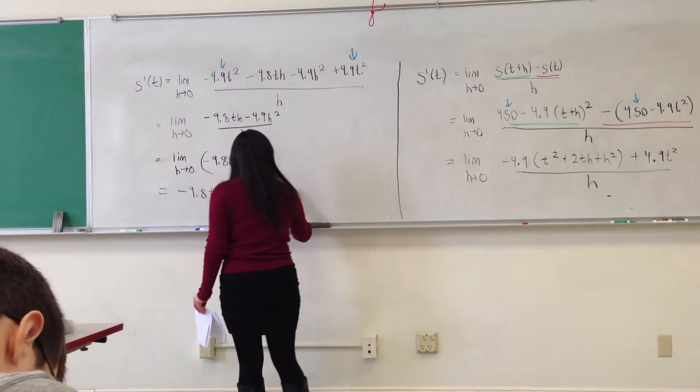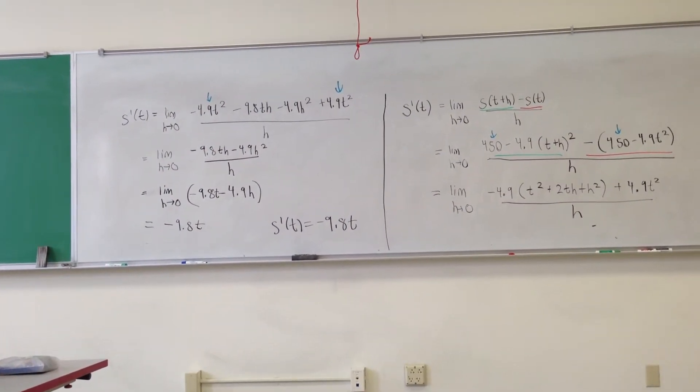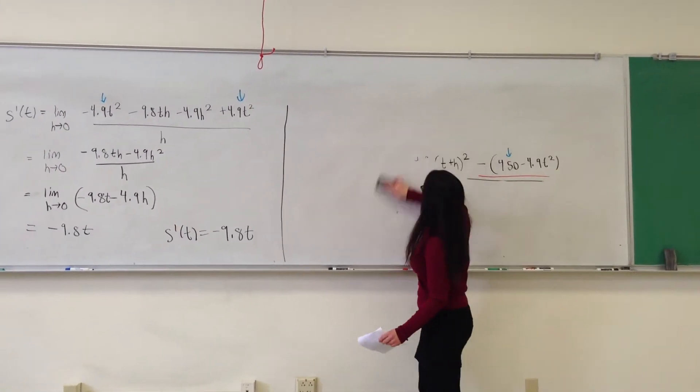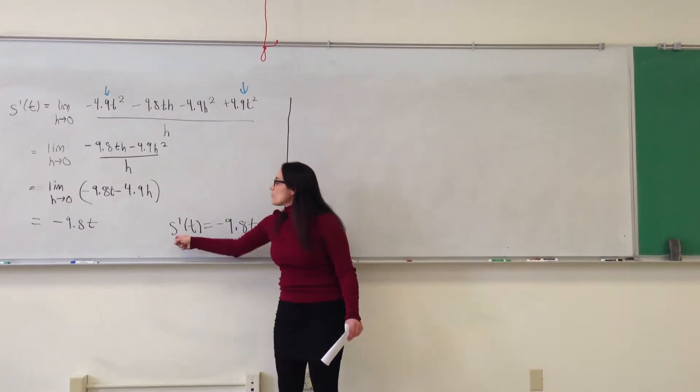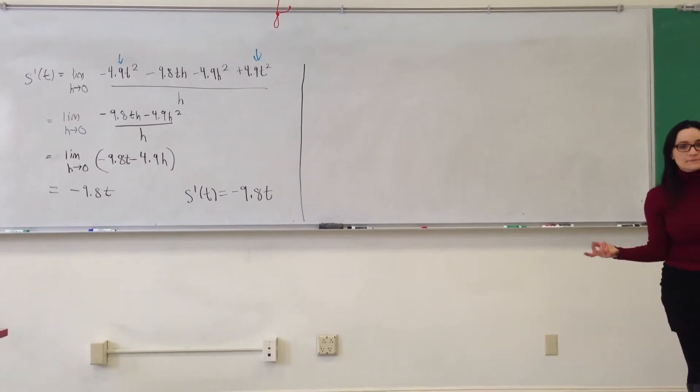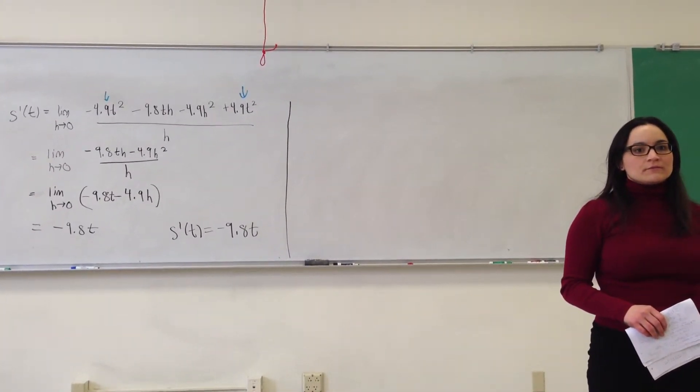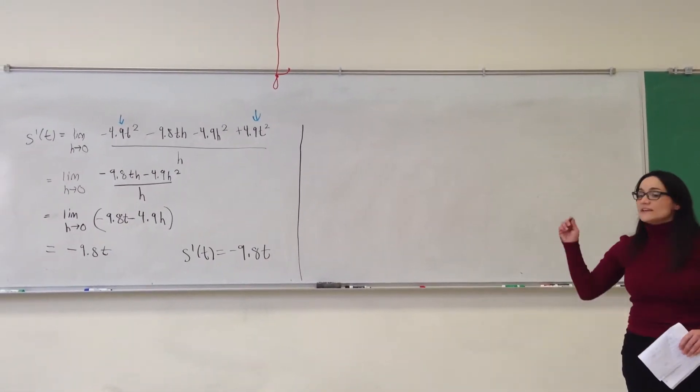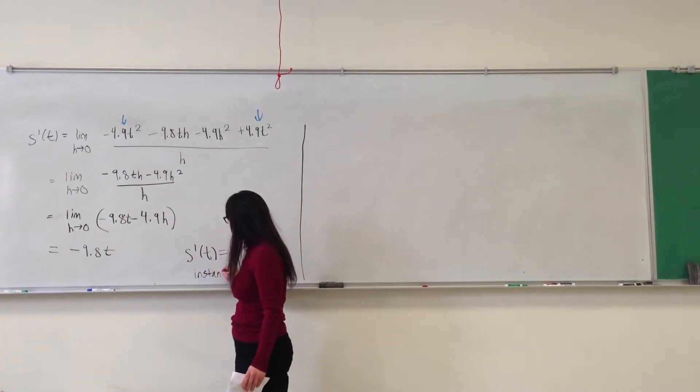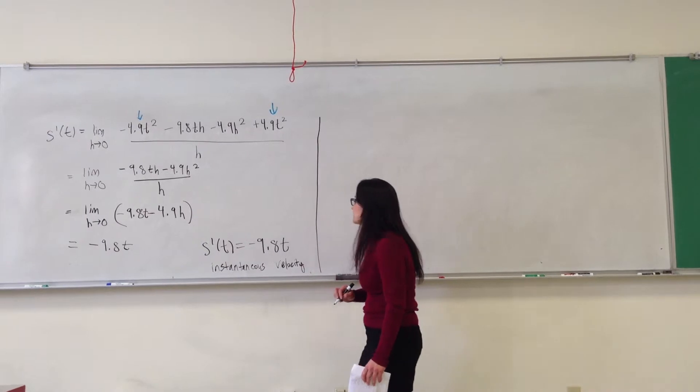So the derivative, s prime of t, is negative 9.8 t for every value, for every time t. And remember, this function s represents the height of a ball s meters above the ground at time t. So what does s prime of t represent in terms of the ball? The rate at which it's falling. This is the instantaneous rate of change. And since it's position and time, this is the instantaneous velocity at time t.